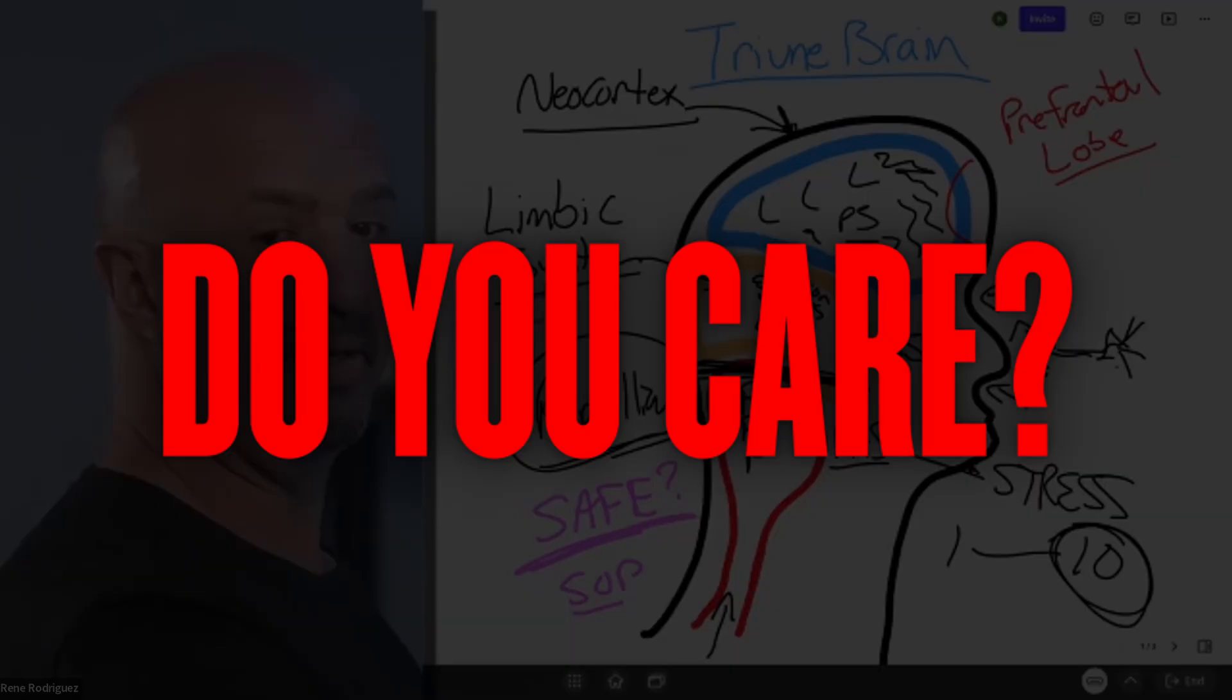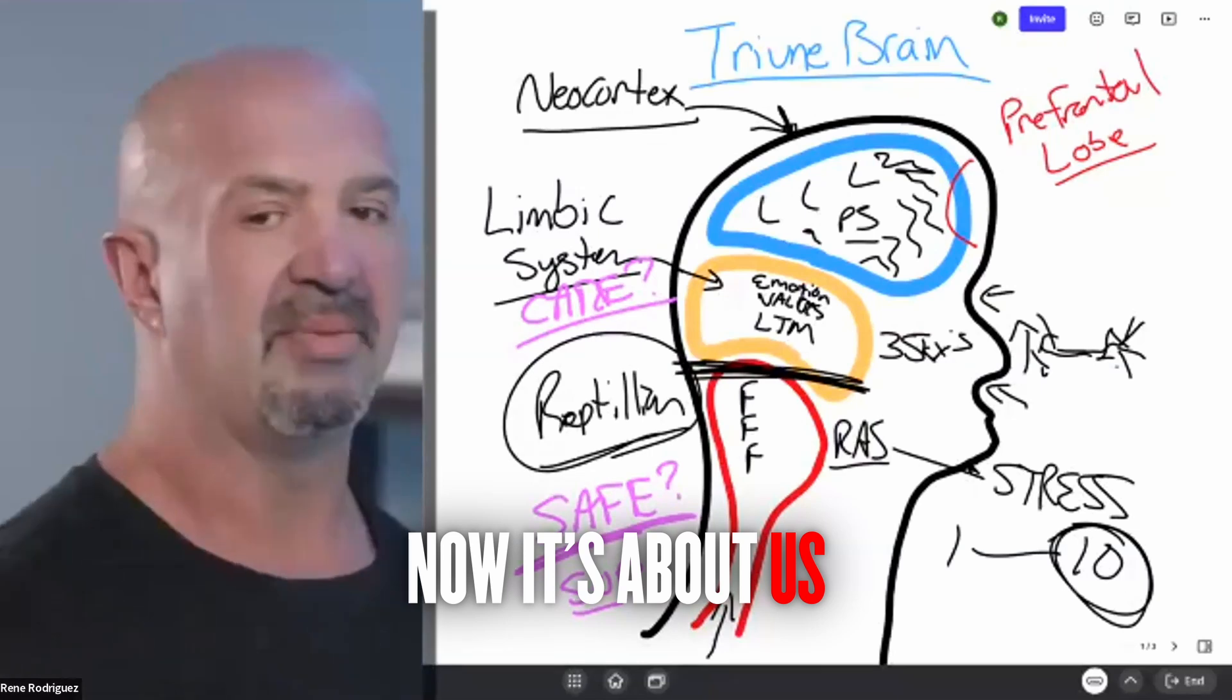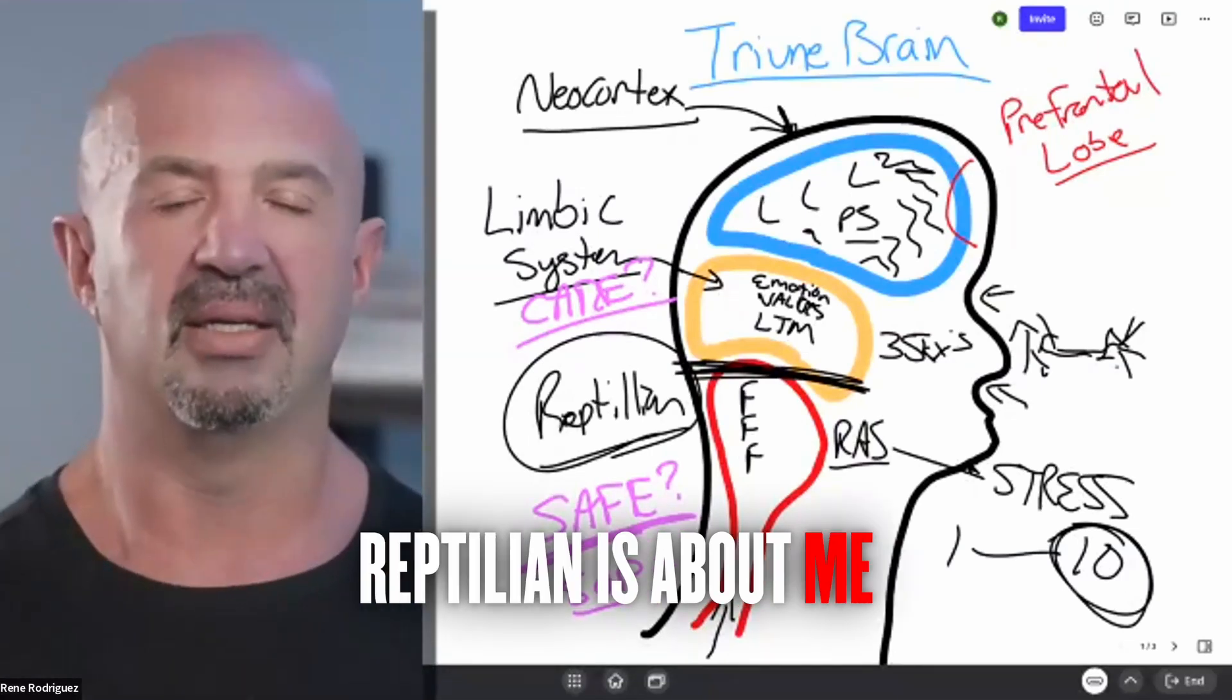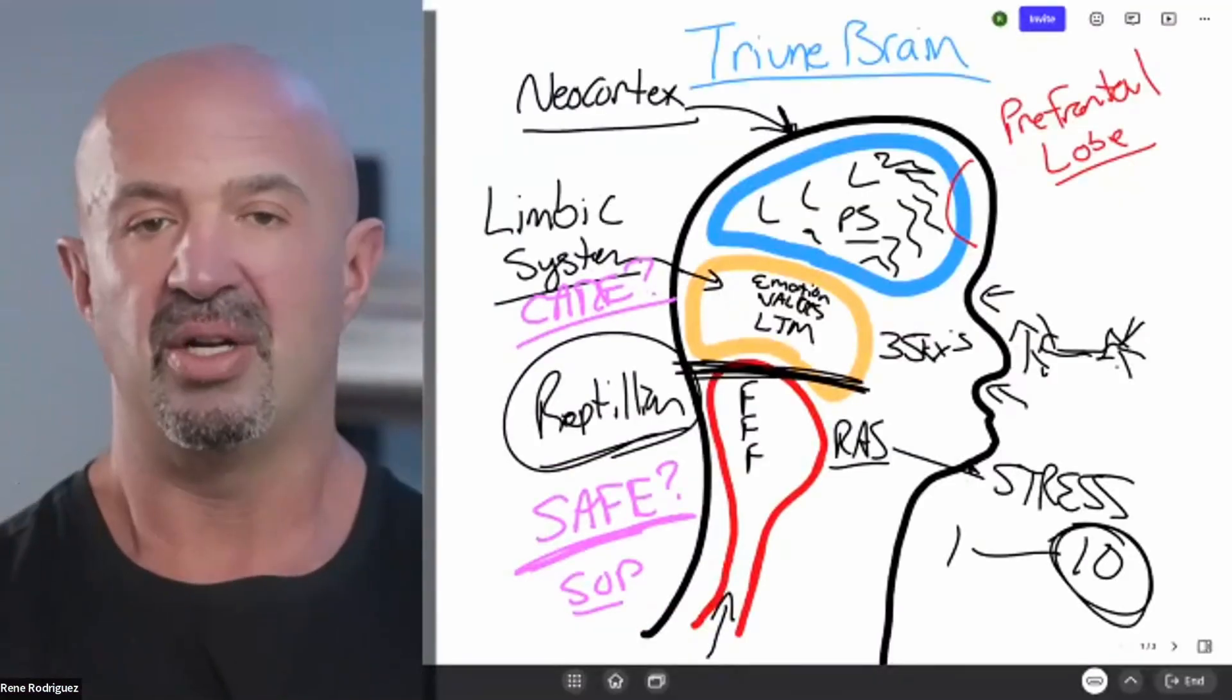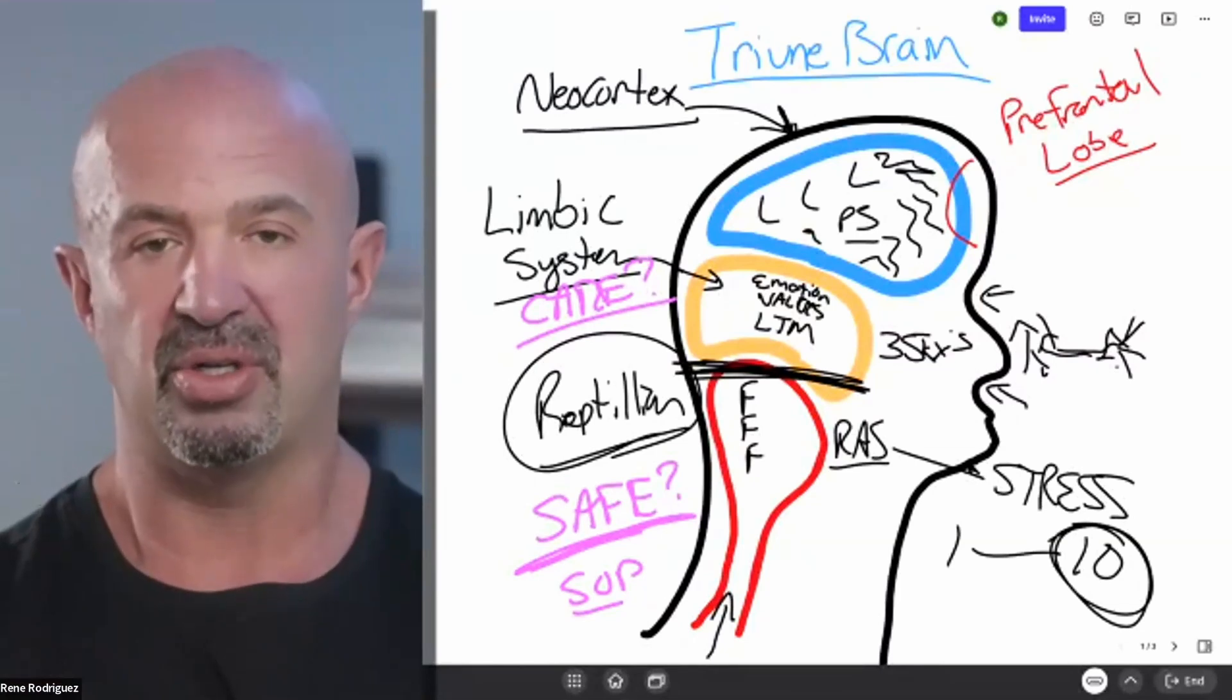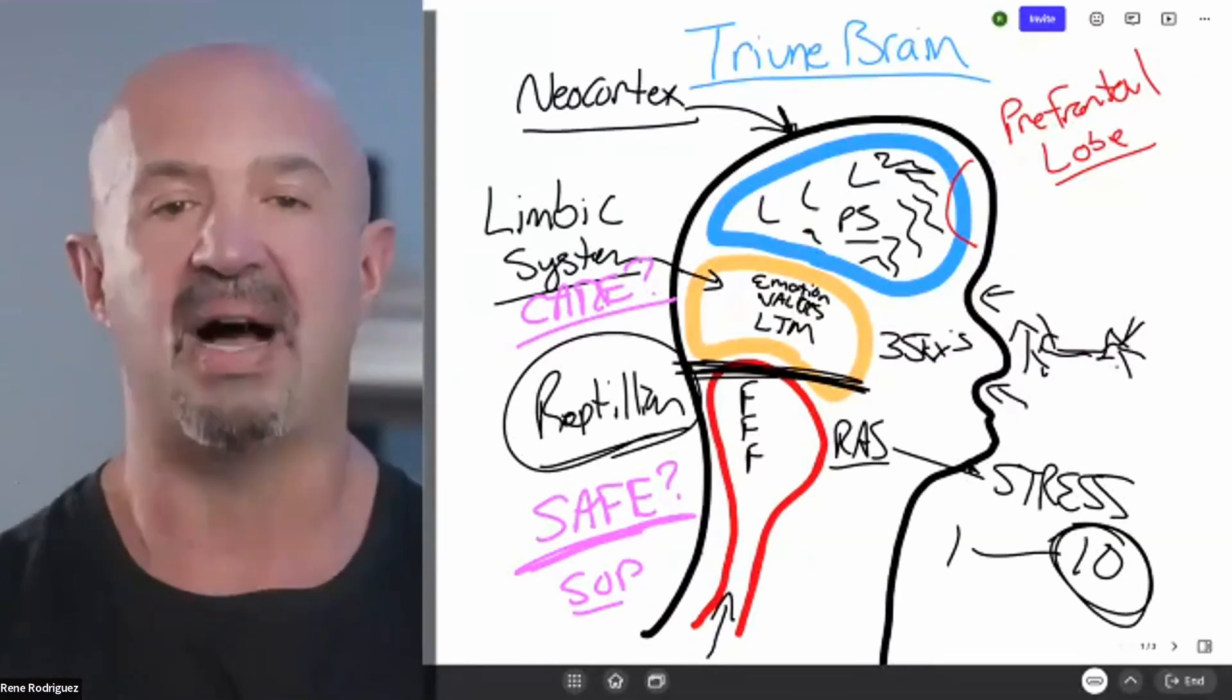The limbic system asks the question of, do you care? Now it's about us, reptilian is about me. These are the gatekeepers. If I know that I don't feel safe and you don't care about me, I'm not moving forward. I don't care how many techniques for influence I teach you. If you haven't made me feel safe and shown that you care, I'm not buying what you're selling. I'm not following you anywhere.